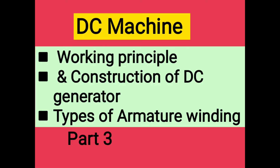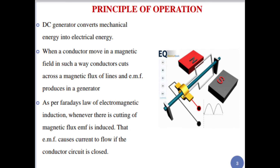Hello students, I am Rachy. Today our topic is the DC machine. In this video we will see the working principle and construction of DC generator, types of armature winding — lap winding and wave winding — and also Fleming's right hand rule. In the last video we saw the parts of DC machine with their explanation, their materials, and types of DC machine.